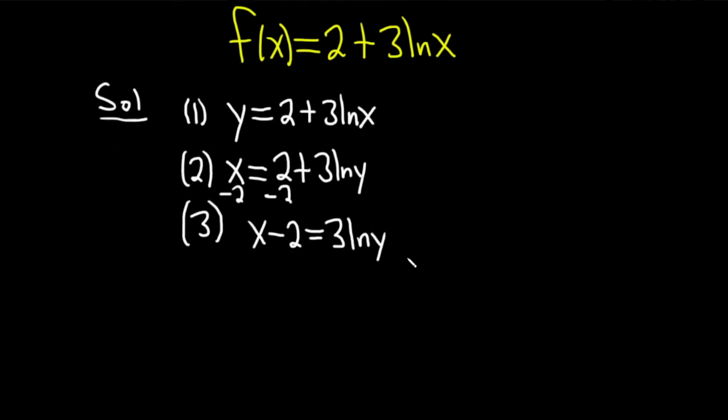And again, we're still trying to get the natural log of y by itself. So maybe we can divide by 3 because it's being multiplied by 3. When we divide by 3, we'll be able to cancel it. Divided by 3. So we have x minus 2 over 3 equals the natural log of y.